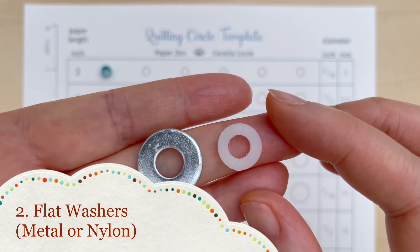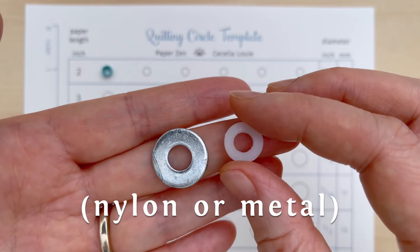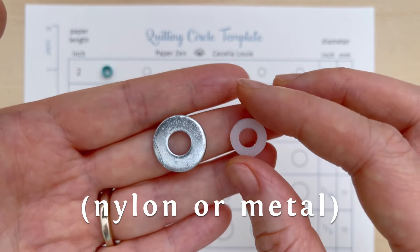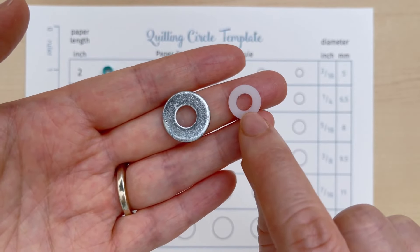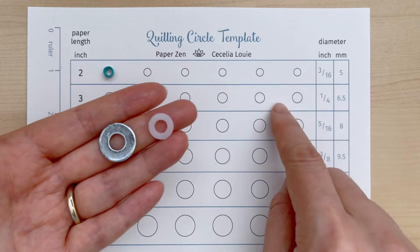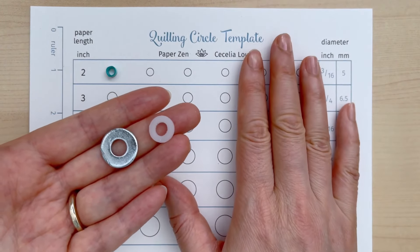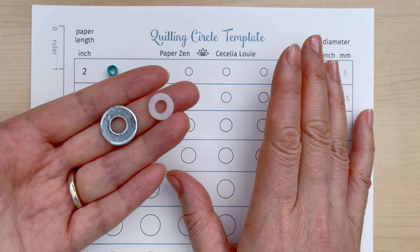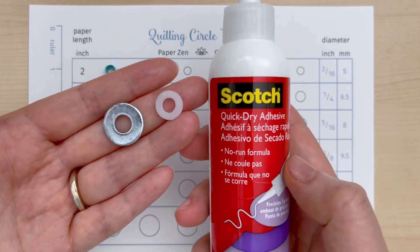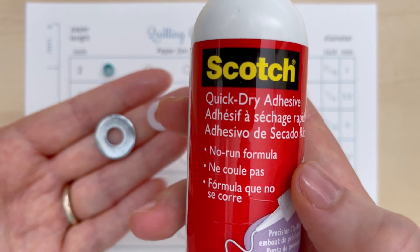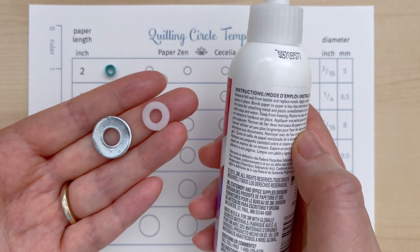For method number two, you can visit the hardware store and you can buy what's called nylon flat washers. They're quite cheap to buy in quite a few of these. And you just want to look for the inside circumference to match what we have on this template. You can glue them down to the template using a hot glue gun, and if you don't have a hot glue gun, you can use what I'm going to show, which is the Scotch quick-dry adhesive. You can actually see on the back here the description does say that you can use it for metal and plastic.